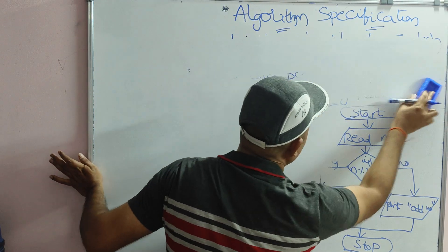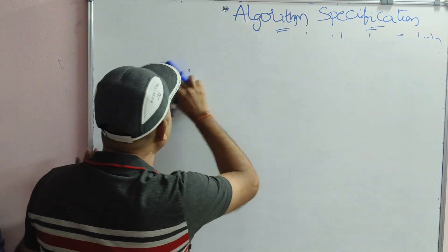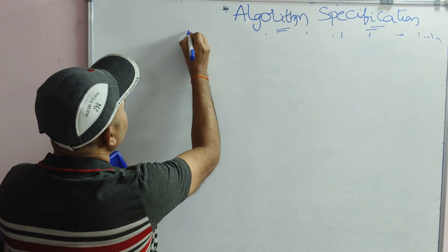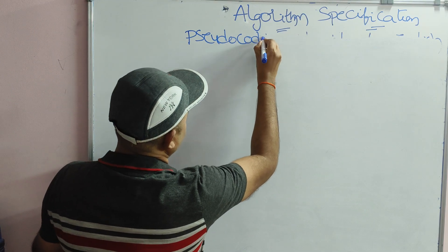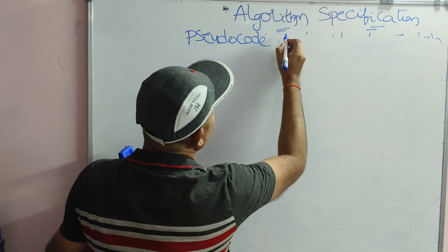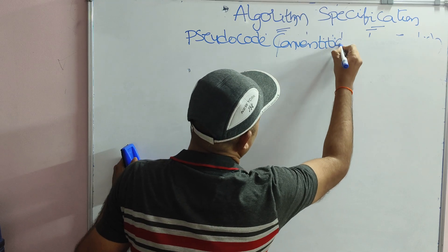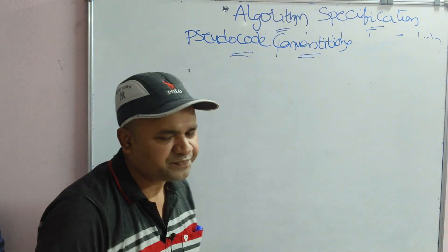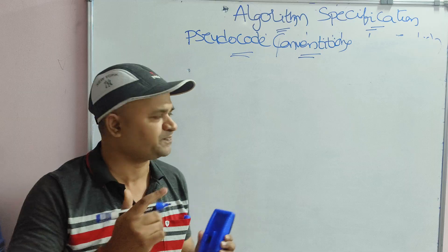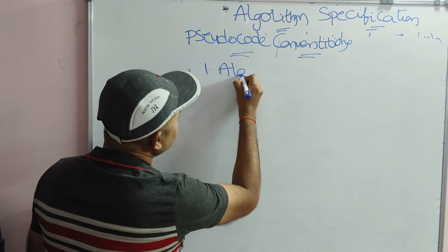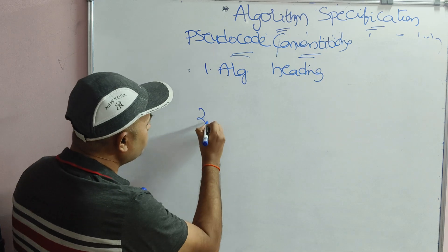In the algorithm subject, our major focus is on how we can write the algorithm using pseudocode notations. Let us see about the pseudocode conventions one by one. Any algorithm is divided into two sections: the first section is the algorithm heading, and the second section is the algorithm body.